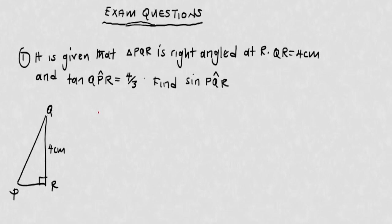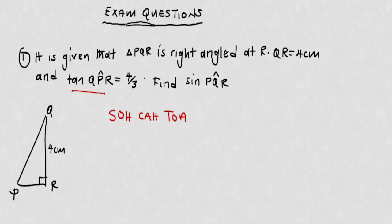Every time you look at a right-angle triangle, what should come to mind is what we call SOHCAHTOA. This is very important — it's going to help us. SOH stands for sine equals opposite over hypotenuse, CAH for cosine equals adjacent over hypotenuse, and TOA for tangent equals opposite over adjacent.